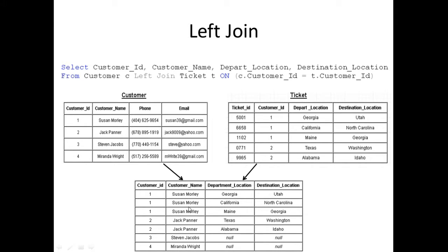So we're going to have each one of these records. Susan Morley has a customer ID of one, and we have three customer IDs of one in this particular table, so Susan Morley is going to be returned three times. She has apparently purchased three tickets to different locations. Then we have Jack Panner, going from Texas to Washington as well as Alabama to Idaho. But when we get to these null values, we're not getting any value back because customer ID three, Stephen Jacobs, is not present in this ticket table. So if it's not present in the ticket table, we're going to get a null value.